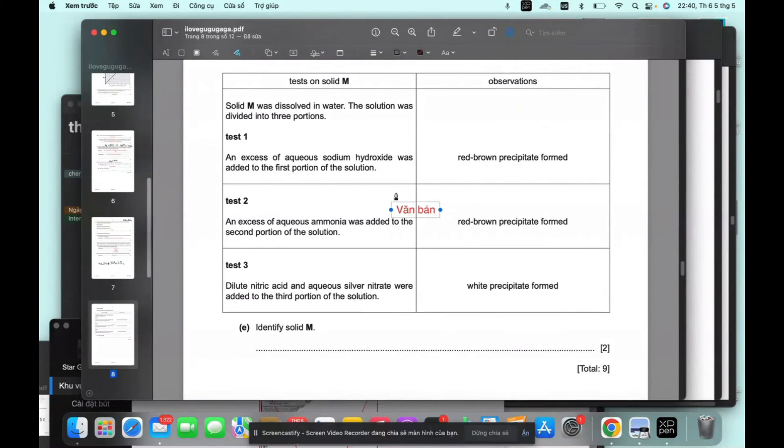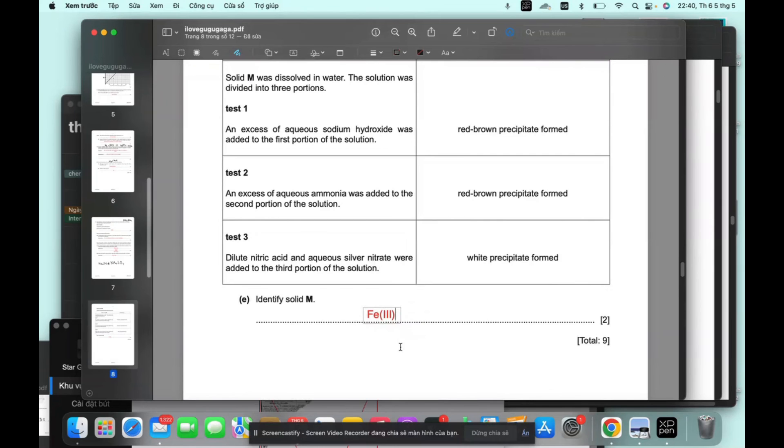Oh, if it's red brown, then I believe. So it's M. Red brown precipitate forms. It would be iron three. Because iron two is green and iron three is red brown. Always red brown.